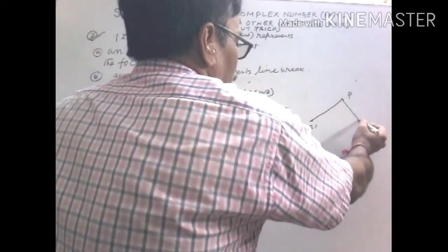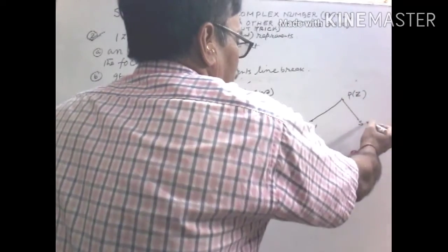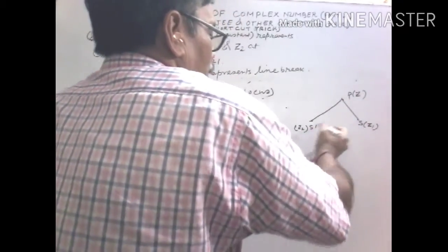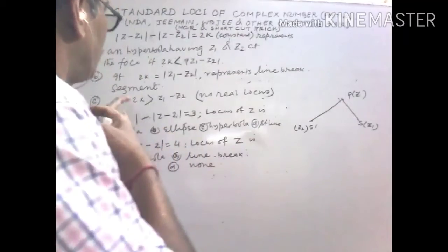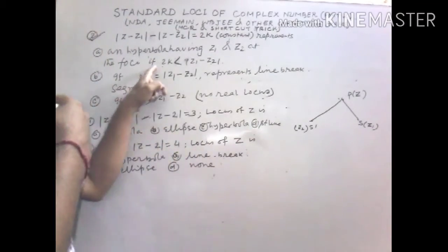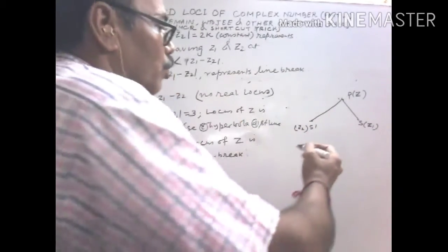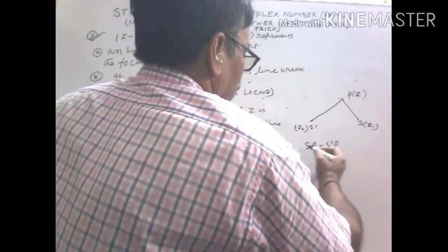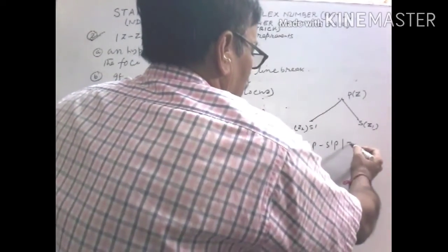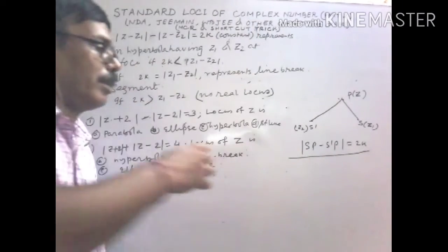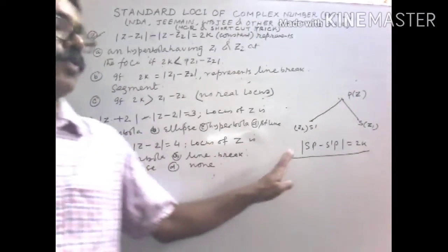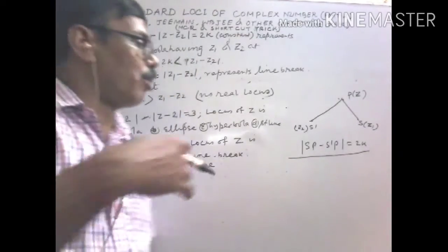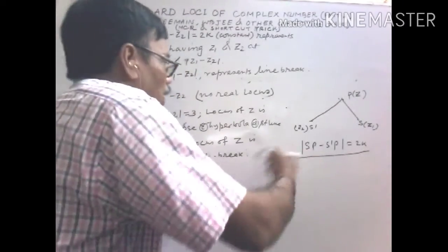This is a result from coordinate geometry. With two fixed points Z1 and Z2 acting as S and S', and P as the moving point: SP minus S'P = 2k. The modulus gives the difference of distances, and the locus of P is a hyperbola. This is our standard result of hyperbola.